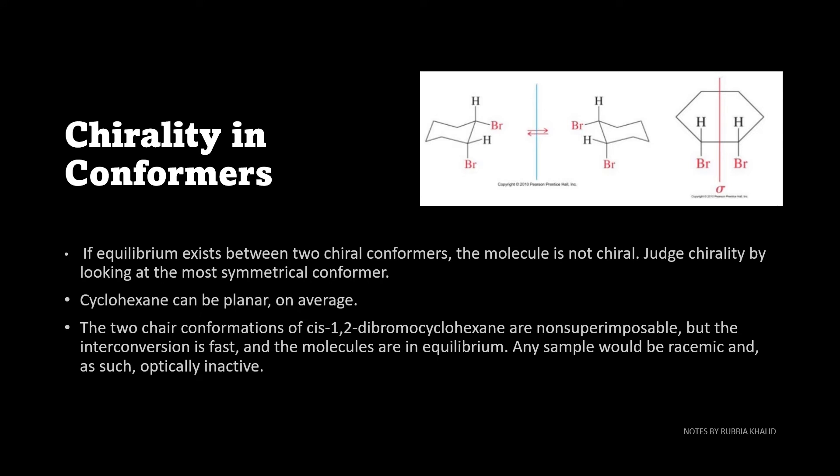Chirality in conformers. If the equilibrium exists between two chiral carbons, the molecule is not chiral. Judge chirality by looking at the most symmetrical conformer. Two chiral conformations of cis 1,2-dibromocyclohexane are non-superimposable, but the interconversion is fast and the molecule is in equilibrium. Any sample would be racemic and as such optically inactive.